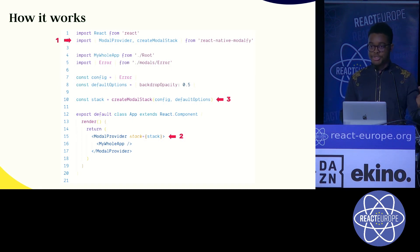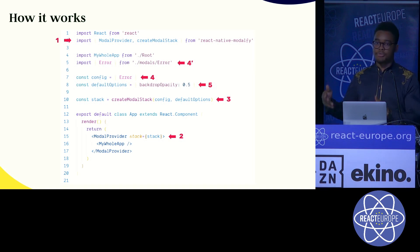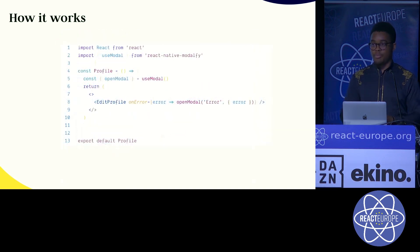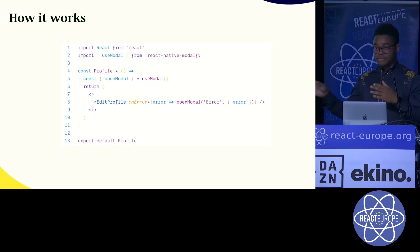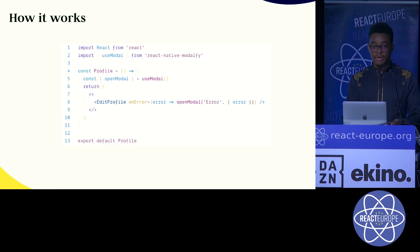The createModal function only takes two arguments, the second one being optional. The first one is pretty much all the modals you're going to want to display, and the second one is just how you want to customize the way it's going to look. That's the easiest way to get up and running with the library. As you can see, I have an 'error' modal, which is my only modal for now, and I'm able to display it from wherever I want in the app using the openModal function. You can get access to that modal using a hook, or if you're more of a HOC type of person, don't worry, we've got you covered.